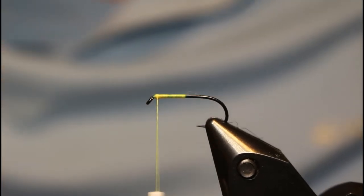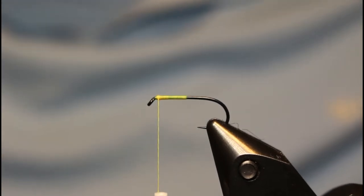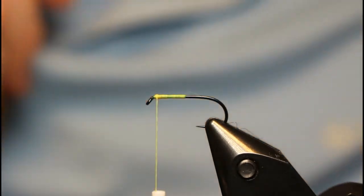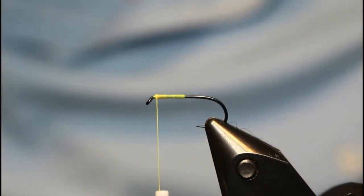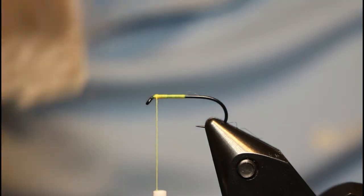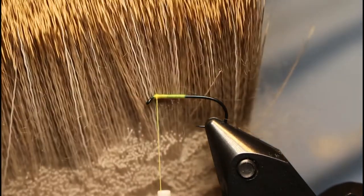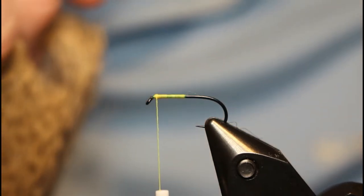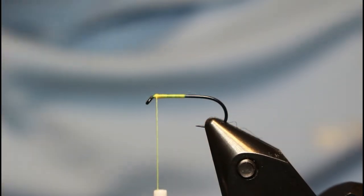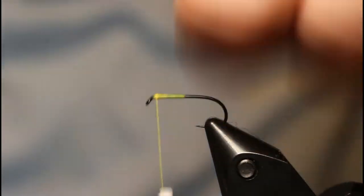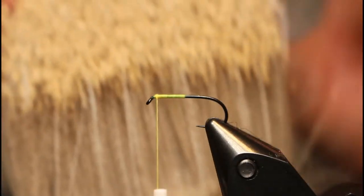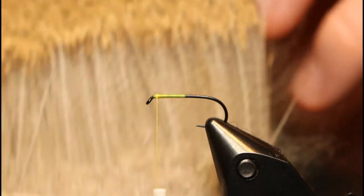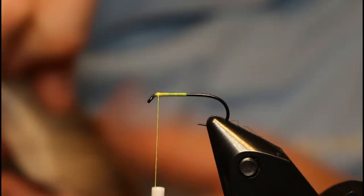For the deer hair that I'm using today, this is Nature Spirit Comparadon deer hair. They have X-Caddis deer hair, which is really good stuff too. But this is by far the best hair on the market right now. Coastal deer hair works great too, but anything that's really fine works great for a caddis. I like this because you can see the barring. This deer hair is already pretty lined up and there's not as much fluff in this.